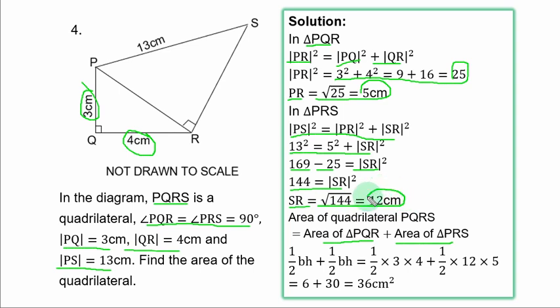So area of quadrilateral PQRS is equal to area of triangle PQR plus area of triangle PRS. That is 1 over 2 times base times height plus 1 over 2 times base times height. That is 1 over 2 times 3 times 4 for the first triangle plus 1 over 2 times 12 times 5 for the second triangle. And you have 6 plus 30, and that is 36 squared centimeters as the area of the quadrilateral.